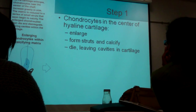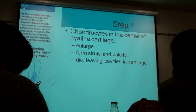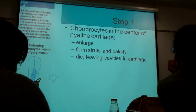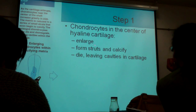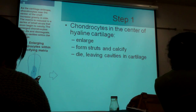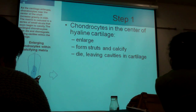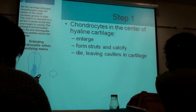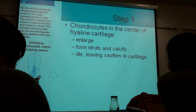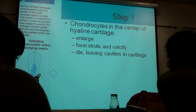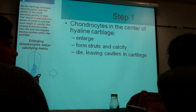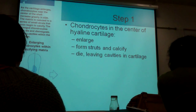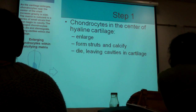Step one: chondrocytes in the center of the cartilage start becoming really big. As they get bigger, they're harder to manage — cells need more nutrients as they're bigger; their surface area to volume ratio changes. So they form struts and they calcify, and because they calcify, this causes them to die. Now they're leaving holes within the cartilage. So we have holes in the very center: first they enlarge, then they calcify, then they die.